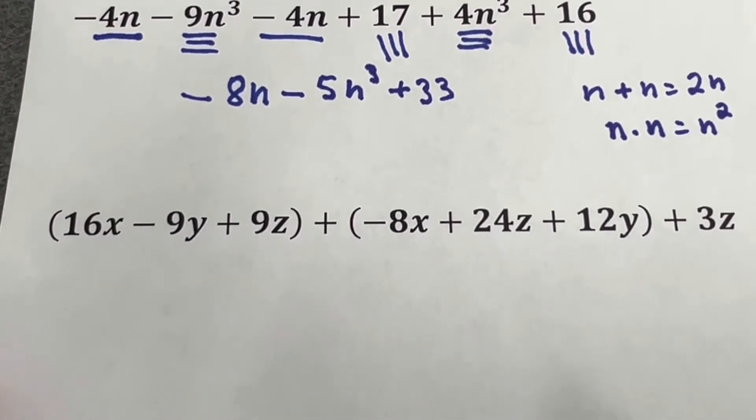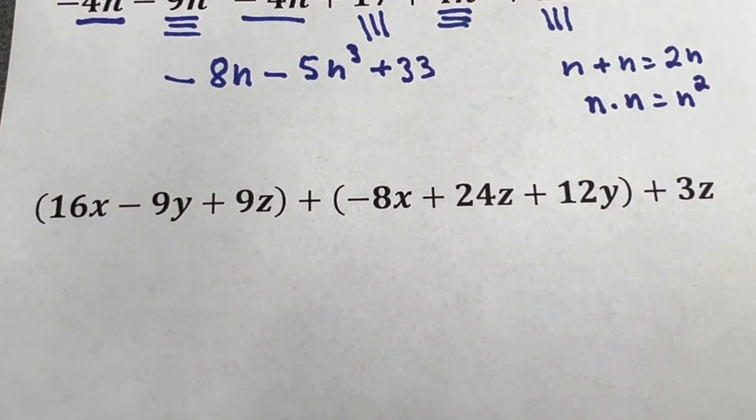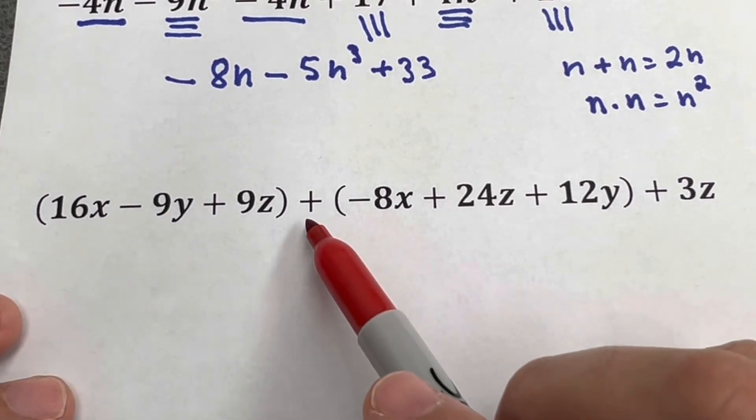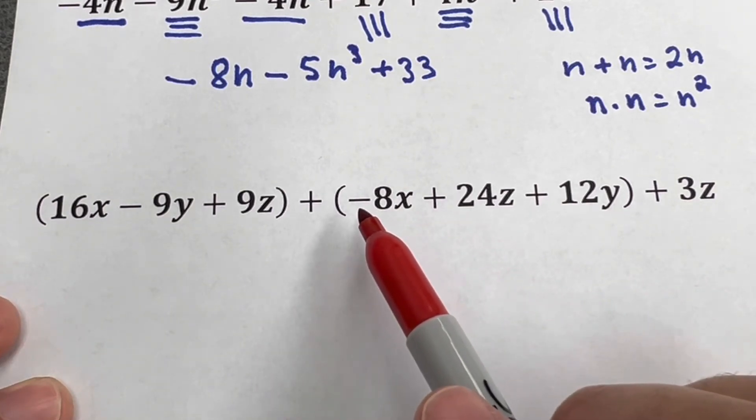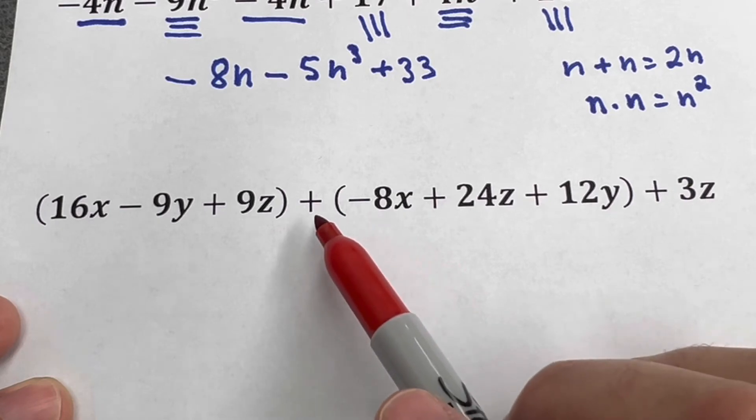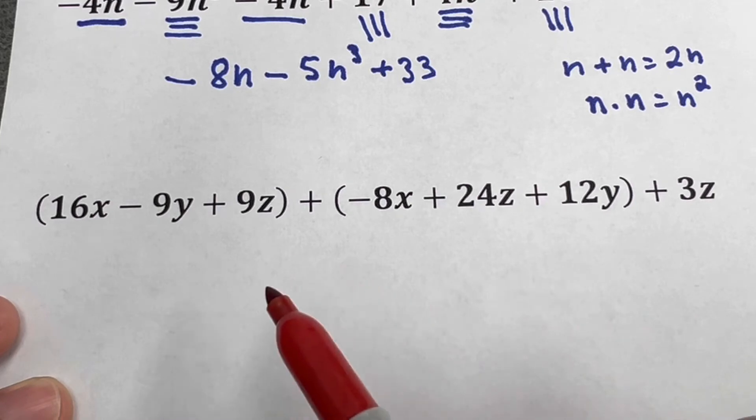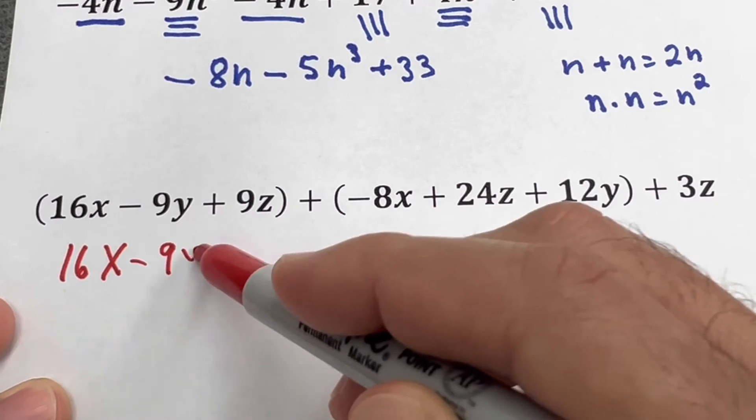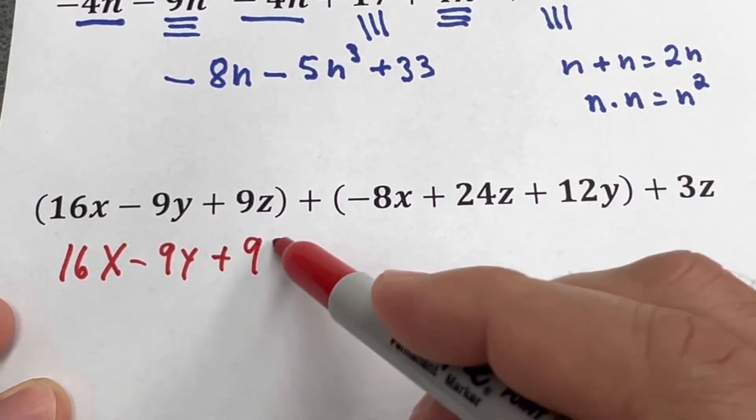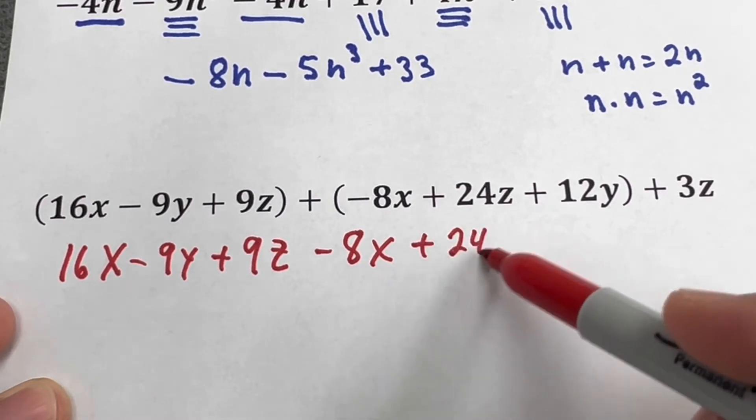Another thing we can do is when we're adding polynomials, the first step is to remove the parentheses. When we have a plus before a parenthesis, it doesn't matter because there's not any change - everything keeps the same. But if you have a minus before a parenthesis, that will change all the signs inside the parentheses. So the first step will be: 16x - 9y + 9z - 8x + 24z...